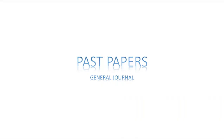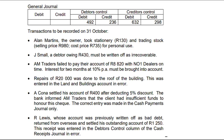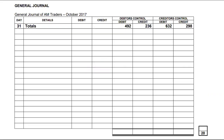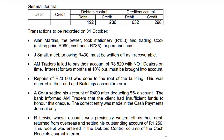I'm going to do the general journal — just one of the past papers from DBE. We are given the balances, so I'm going to take those and put them in my general journal. Then I'll go back and read each transaction. Remember, for each transaction there will be a debit entry and a corresponding equal credit entry.